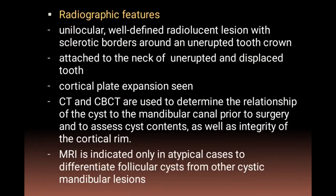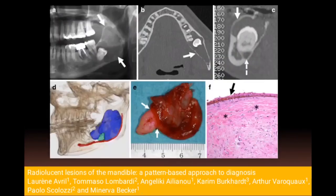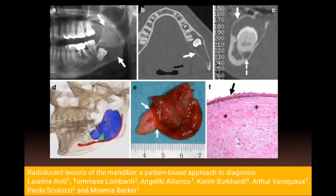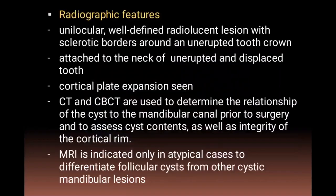Radiographic features show a unilocular, well-defined radiolucent lesion with a sclerotic border around the crown of an unerupted tooth, with the border at the neck of the tooth. Cortical plate expansion may be present. CBCT or CT is used to determine the relationship of the cyst to the mandibular canal prior to surgery, and MRI investigation may also be performed.